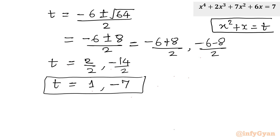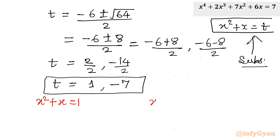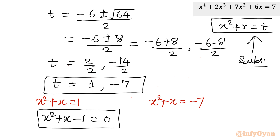These are our t values. Now remembering our substitution x² + x = t, we substitute back. For t equal to 1, we get x² + x equal to 1, and for t equal to negative 7, we get x² + x equal to negative 7. Rearranging, our first quadratic equation is x² + x minus 1 equal to 0, and the second is x² + x plus 7 equal to 0.